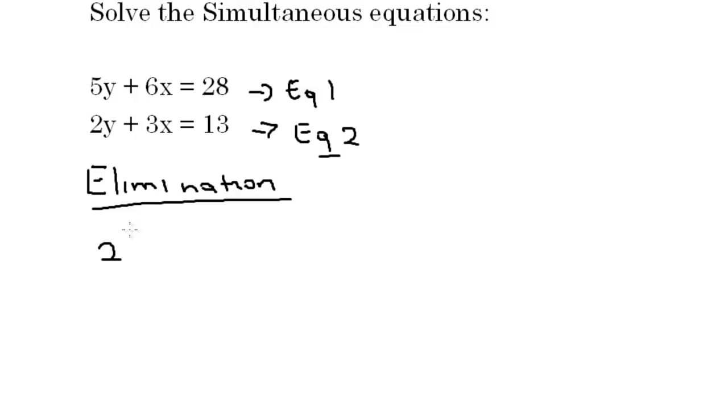So that gives me 2 times 2y plus 3x equals 13. Multiplying all by 2: 2 times 2 is 4y, 2 times 3 is 6x, and that equals 2 times 13 is 26. Now this is the new equation 2.